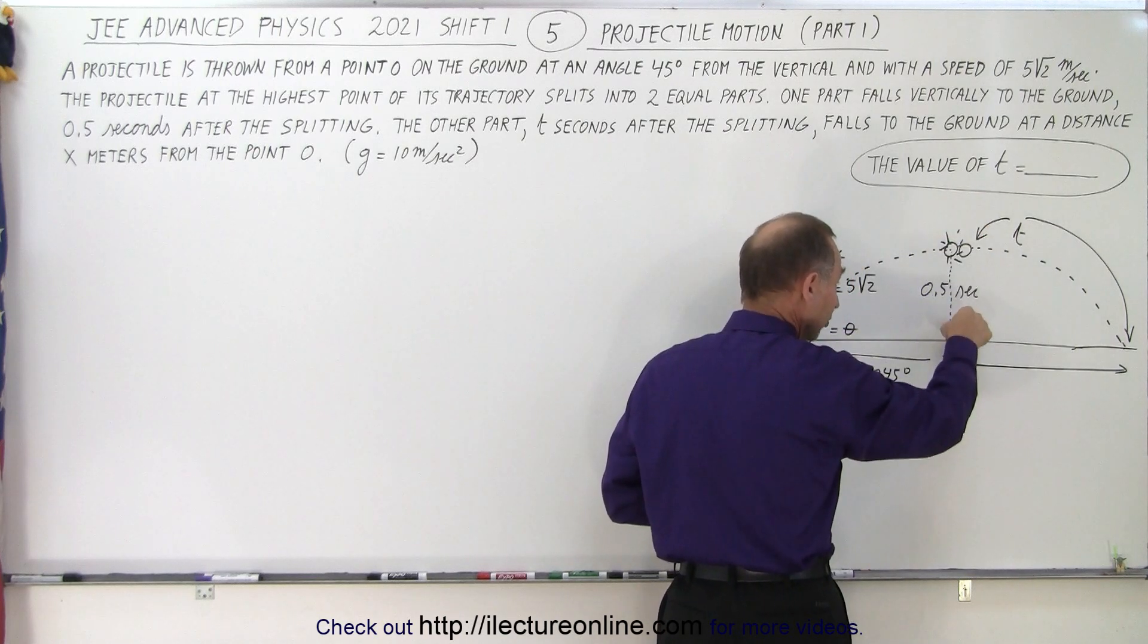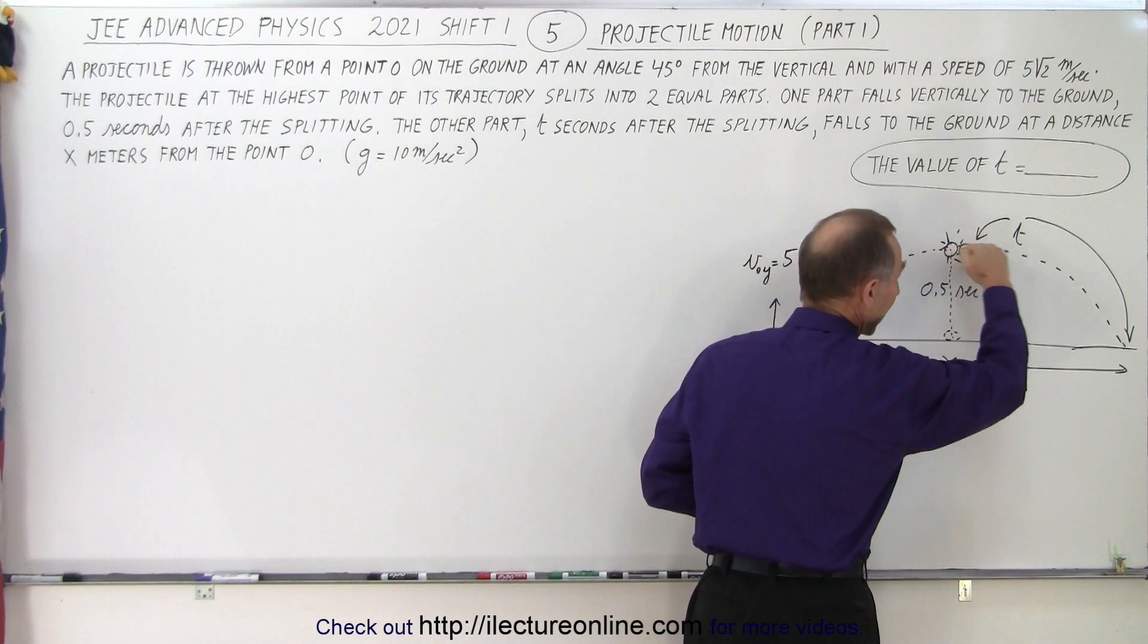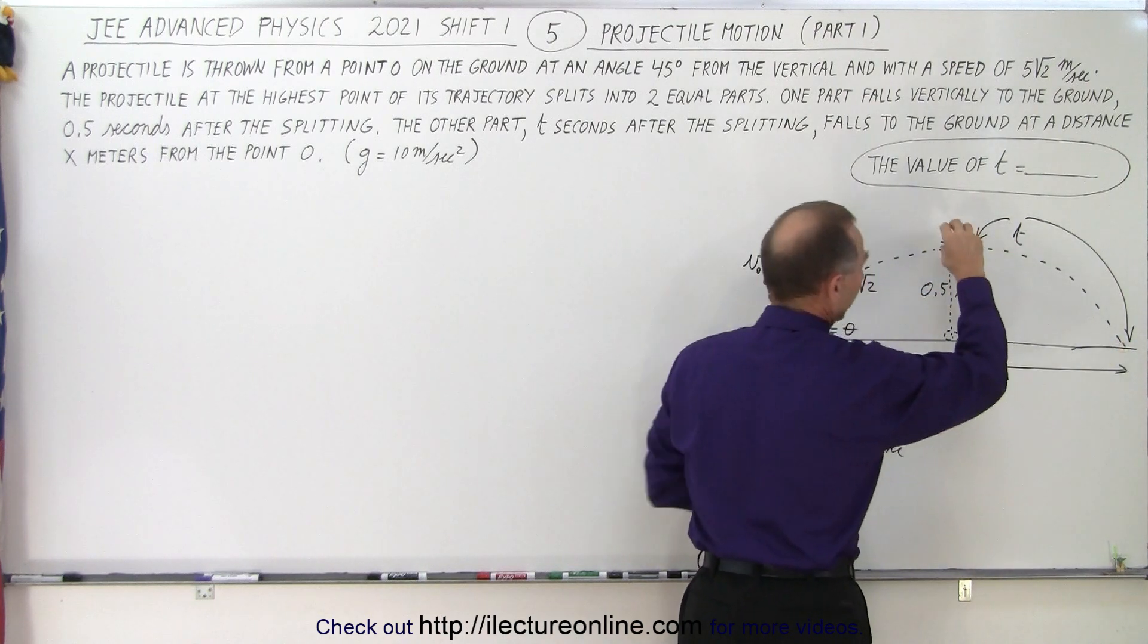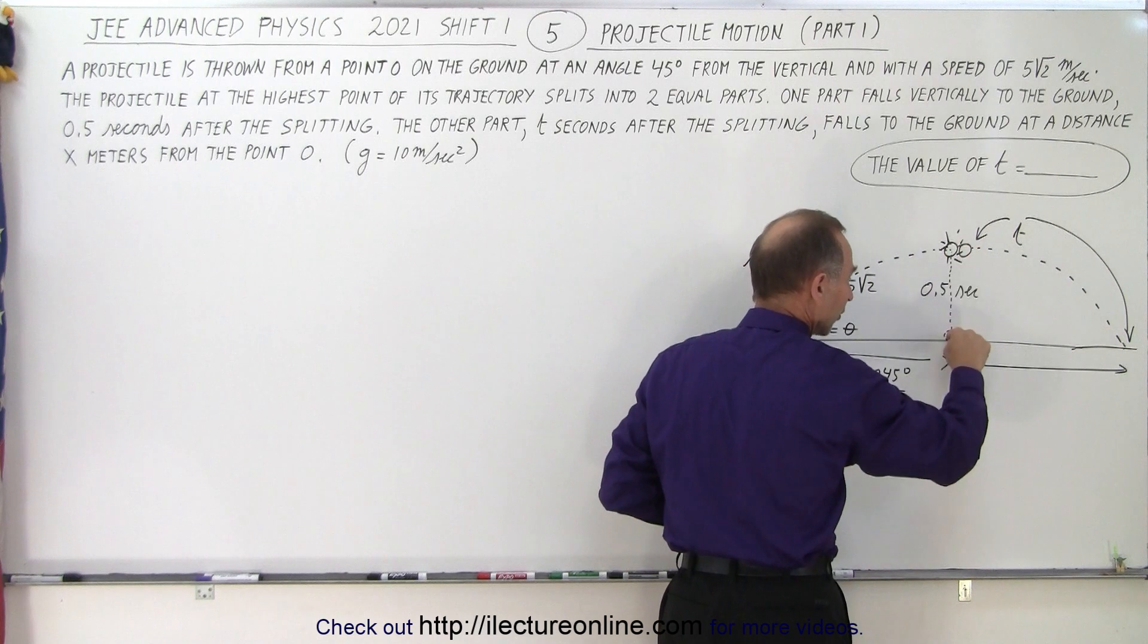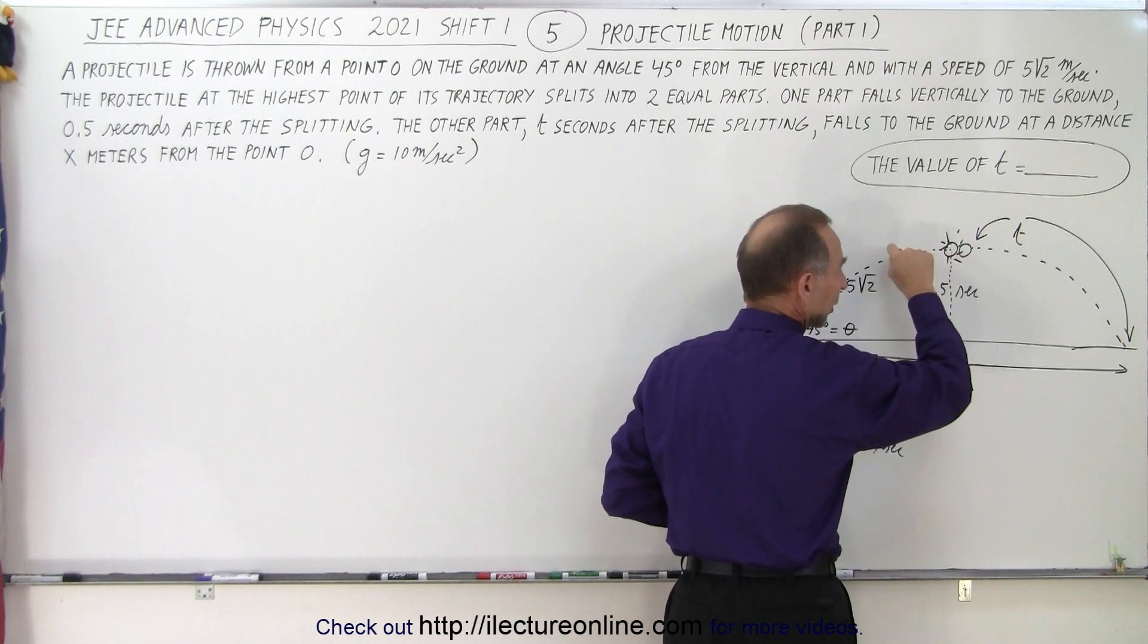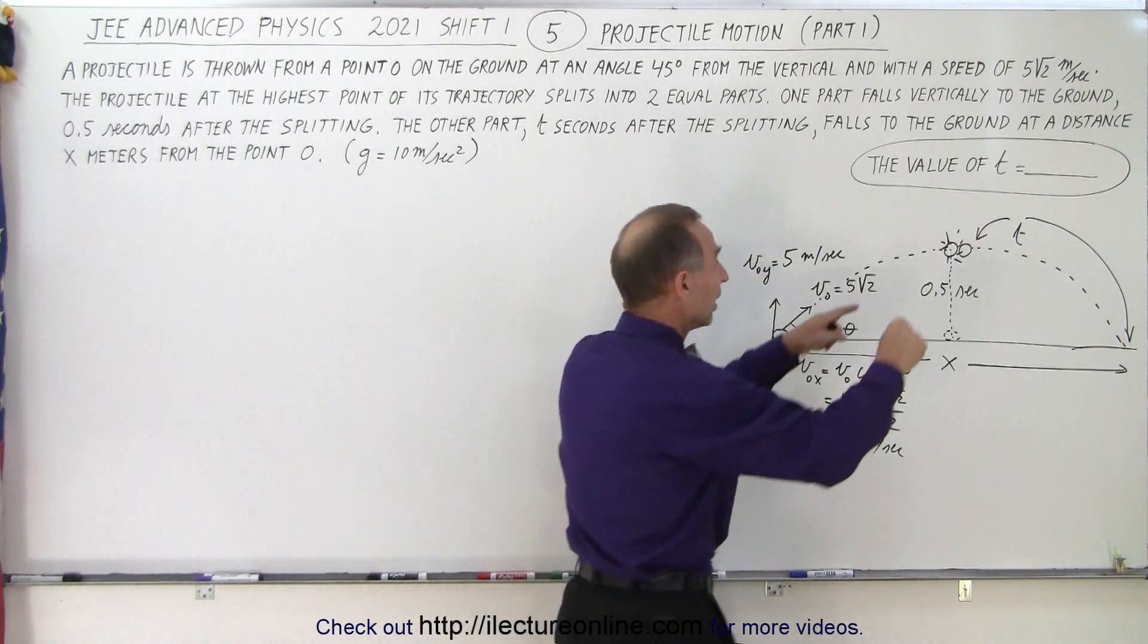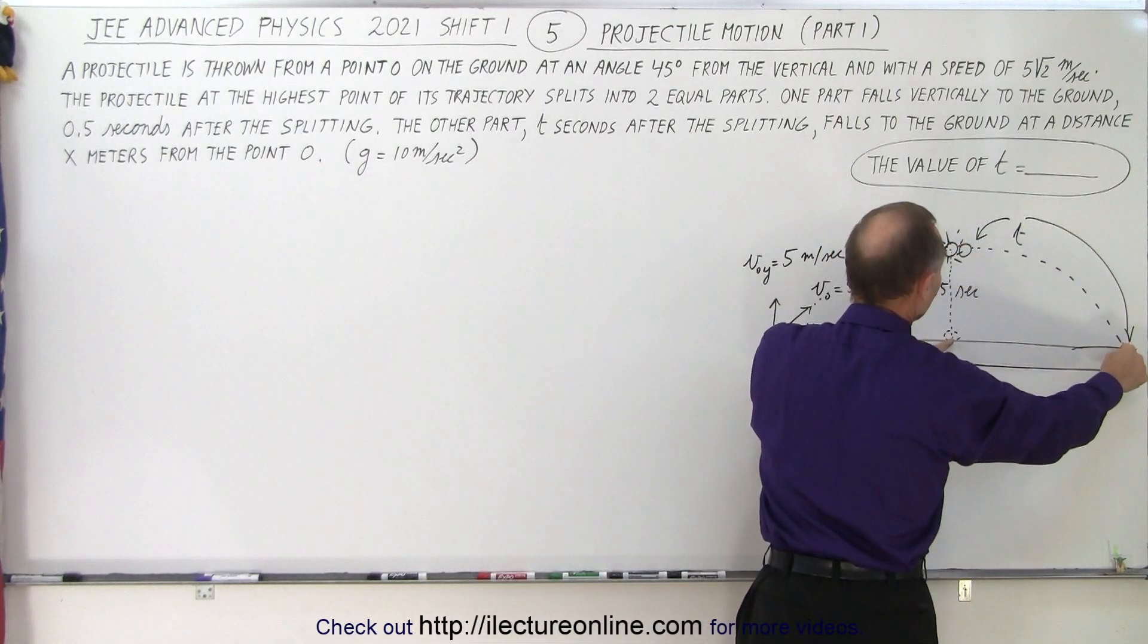One begins to fall straight down. The other one continues in a straight line path as a projectile until it hits the ground. Two parts that start from the same point, one that falls directly vertically, the other one that goes in a horizontal direction, where neither one of them has an initial velocity in the y direction, they both will hit the ground at the same time.